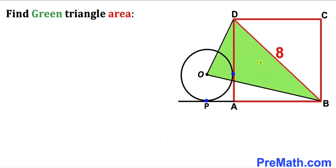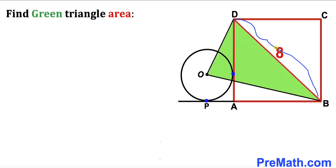Welcome to pre-math. In this video we have got this square ABCD along with this circle with the center O. As you can see in this diagram, we get this green shaded triangle OBD, and the length of this diagonal BD is 8 units. Our task is to calculate the area of this green shaded triangle OBD.